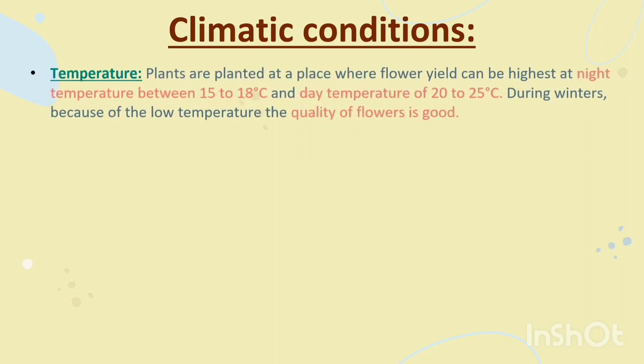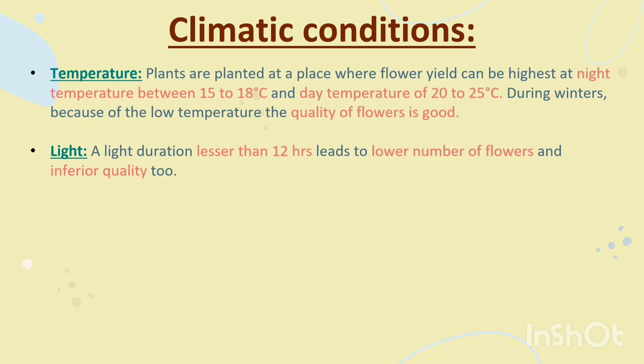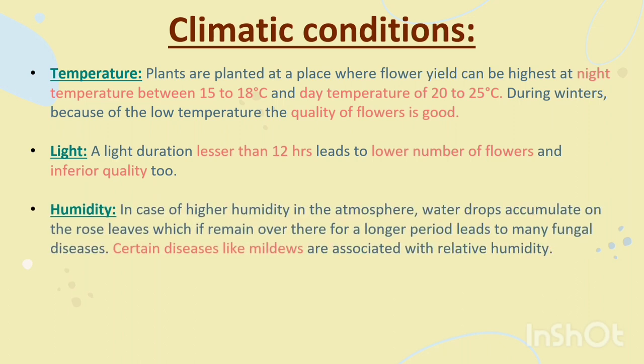Climatic Conditions. Temperature: Plants are planted at a place where flower yield can be highest at night temperature between 15 to 18 degrees Celsius and day temperature of 20 to 25 degrees Celsius. During winters, because of the low temperature, the quality of flowers is good. Light: Light duration lesser than 12 hours leads to a lower number of flowers and inferior quality. Humidity: In case of higher humidity in the atmosphere, water drops accumulate on the rose leaves which, if they remain for a longer period, leads to many fungal diseases. Certain diseases like mildews are associated with relative humidity.